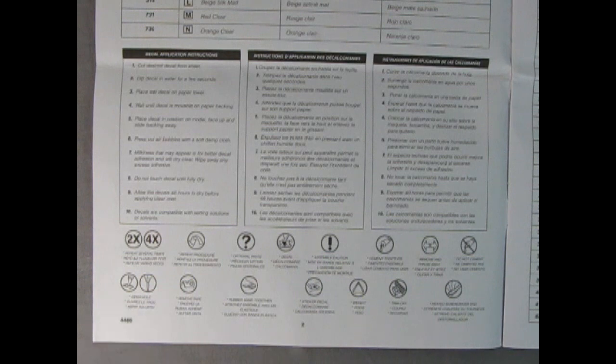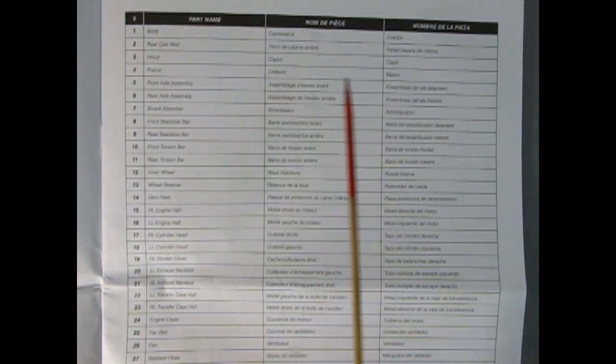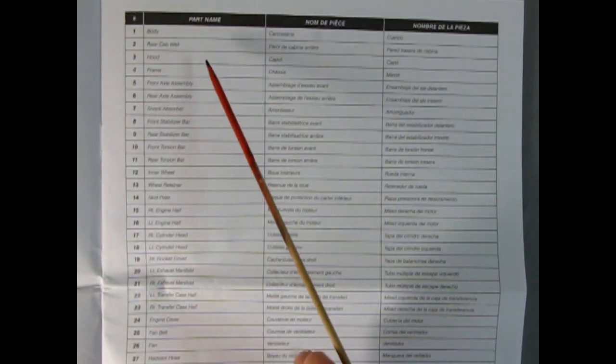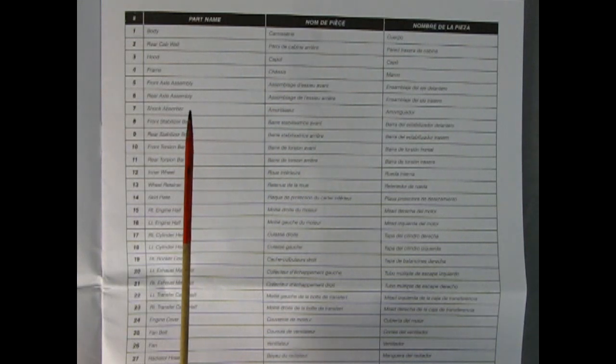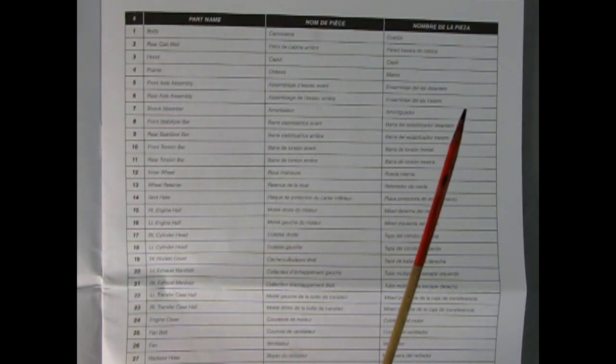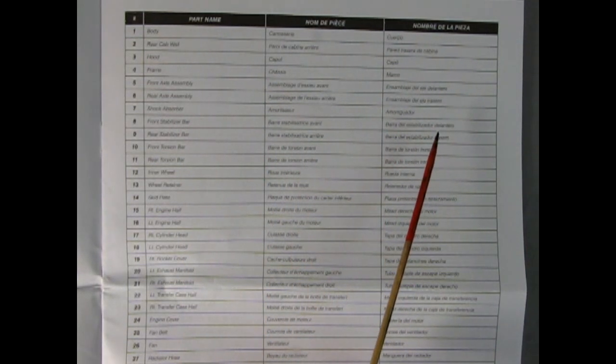They also include instructions on how to apply the water slide decals as well as all the symbols that you will see in your build. In addition, they supply a chart showing the part name and a listing of what all the parts are, including the number on the instruction sheet that refers to that part. The instructions are in English, French, Spanish, and even German.